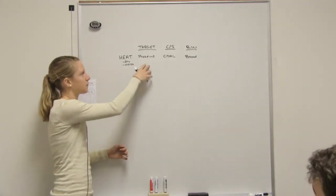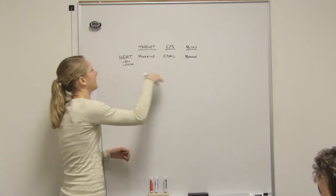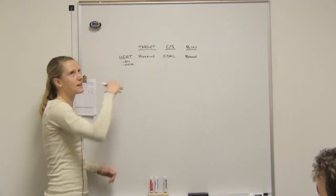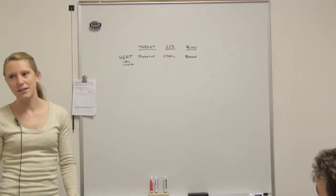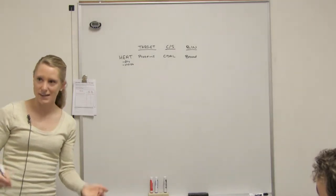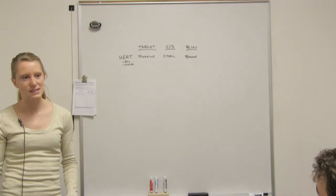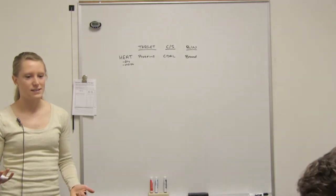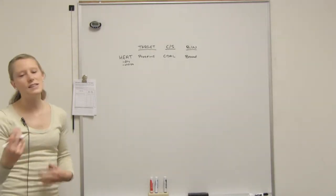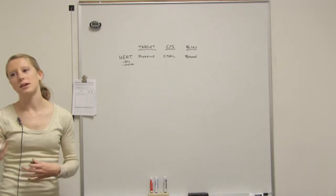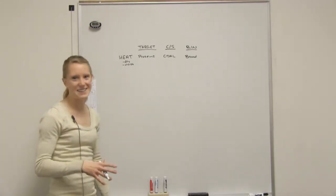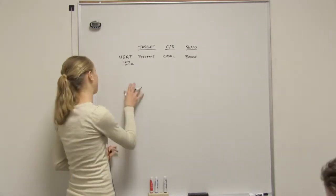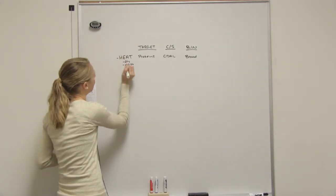Do you kind of see what I'm trying to make you do? Just by knowing the target, does it make sense how we could figure out everything else? Yeah. Instead of having to memorize heat proteins, heat cidal, heat broad - you can remember heat proteins. If I target proteins, it's going to disintegrate the cell, cidal. Do bacteria have proteins? Yes. Do viruses have proteins? Yes. So it's broad. Does that make sense? As you do more, it'll make more and more sense because we get more examples.